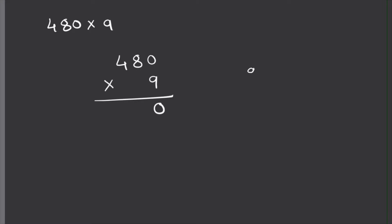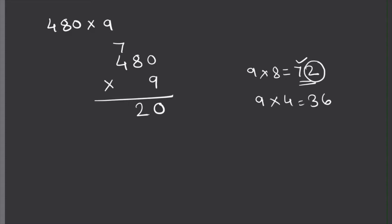9 times 0 is 0. Then 9 times 8 is 72 — I write 2 here and carry the 7 to the hundreds place. Now 9 times 4 equals 36, but we add the carried 7, so 36 plus 7 equals 43. I write 3 here, and since there are no more digits to carry over to, I drop the 4 here. We get 4320 as the answer.